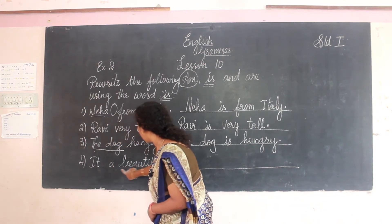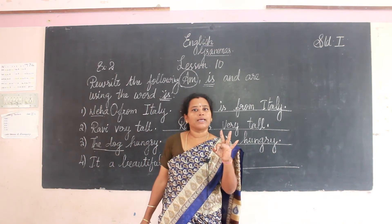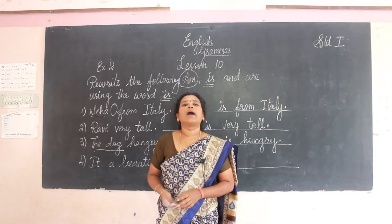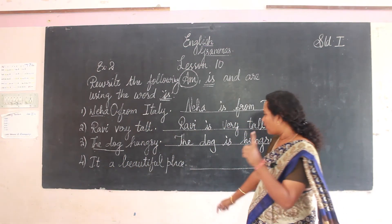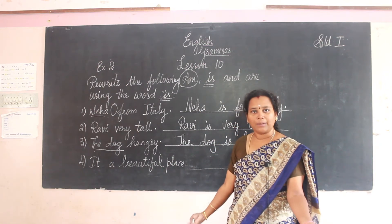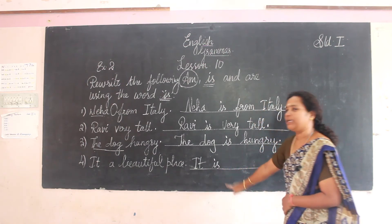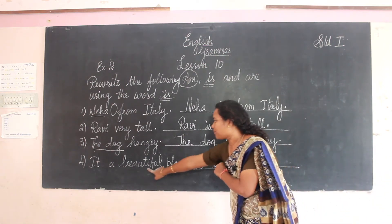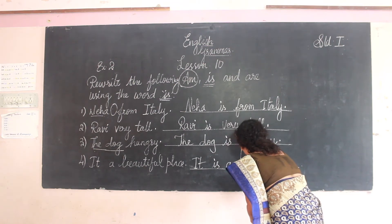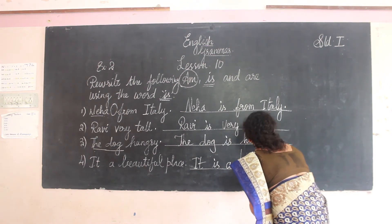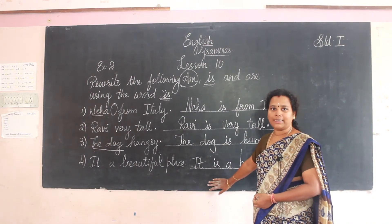Now see the last one: 'It a beautiful place.' 'It' is a pronoun — he, she, it are pronouns. After a pronoun we write 'is'. We are talking about one single place. So: 'It is a beautiful place' — B-E-A-U-T-I-F-U-L P-L-A-C-E. I hope you have understood this topic.